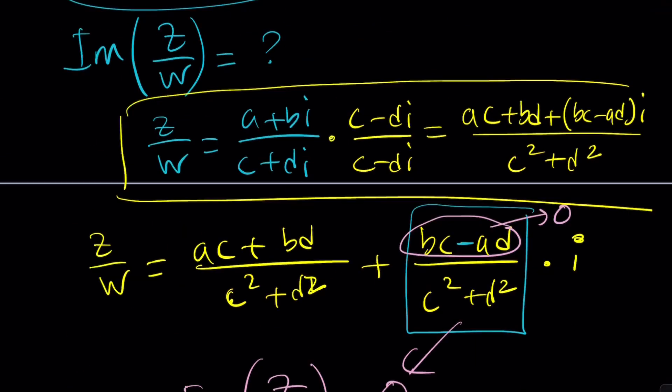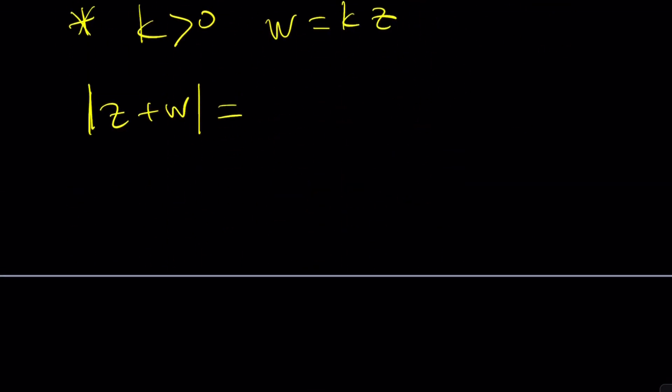I'm going to replace W with KZ because that's what it is. So Z plus KZ. And then I'm going to factor out a Z. This is going to be Z times K plus 1.